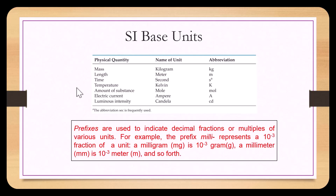Prefixes are used to indicate decimal fractions or multiples of various units. For example, the prefix milli represents 10 to the negative third, meaning it divides by 1,000. So a milligram is 10 to the negative third grams, or 1 gram divided by 1,000. A millimeter is 10 to the negative third meters, or 1 meter divided by 1,000. These are common prefixes used in chemistry.